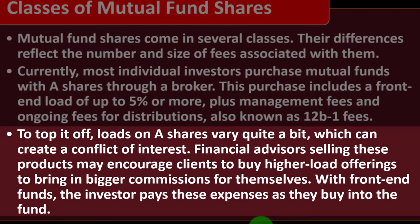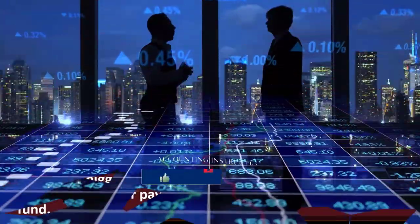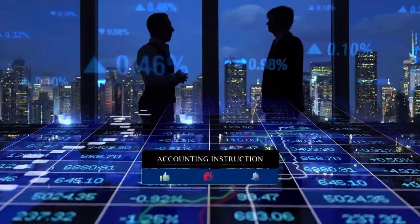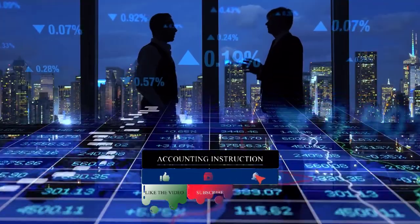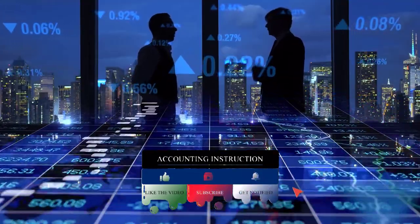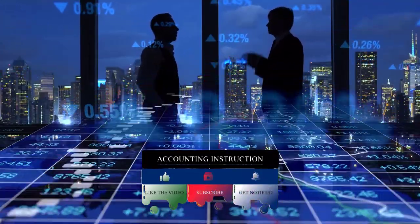Most individual investors purchase mutual funds with A shares through a broker. This purchase includes a front-end load of up to 5% or more, plus management fees and ongoing fees for distributions, also known as 12B-1 fees. Loads on A shares vary quite a bit, which can create a conflict of interest. Financial advisors selling these products may encourage clients to buy higher-load offerings to bring in bigger commissions for themselves.